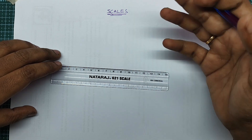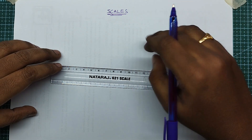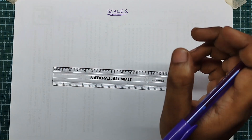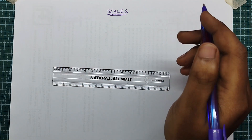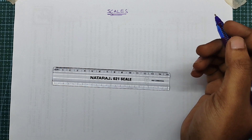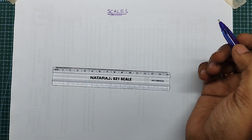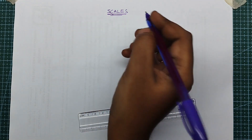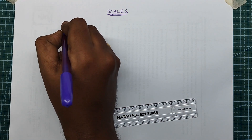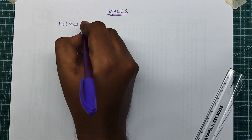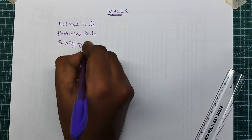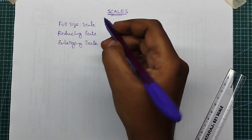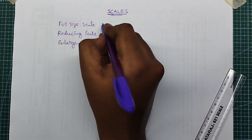We use full scale and reducing scale. Scale representation has three types: full size scale, reducing scale, and enlarging scale.